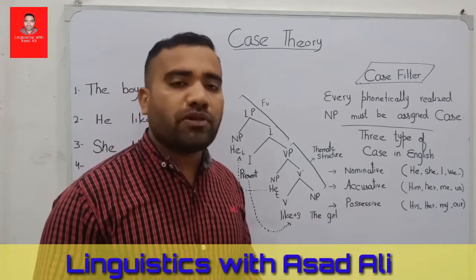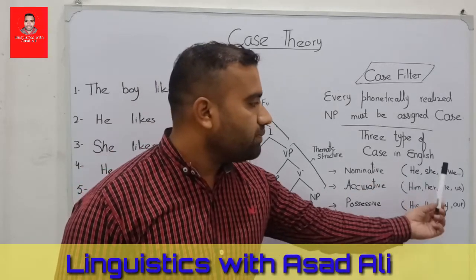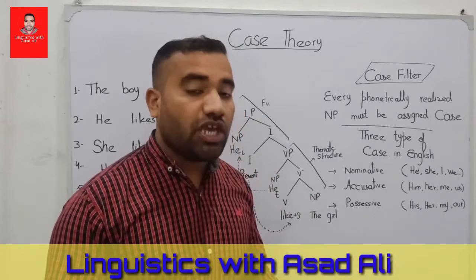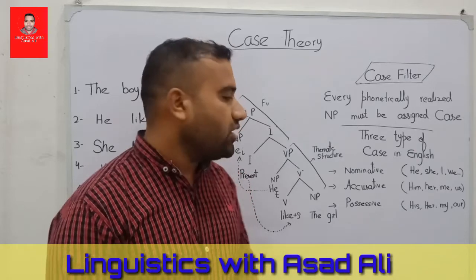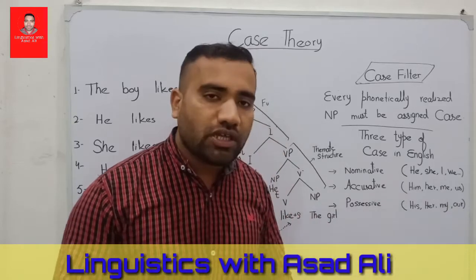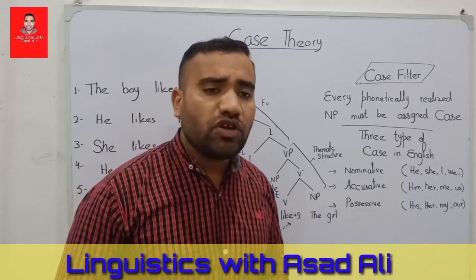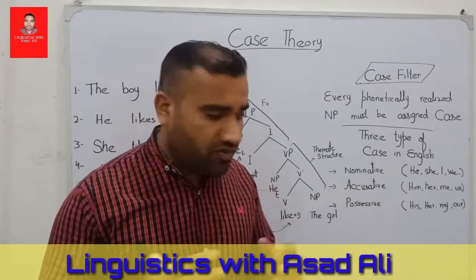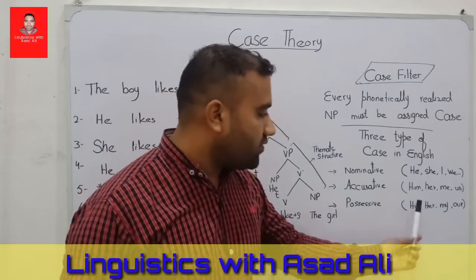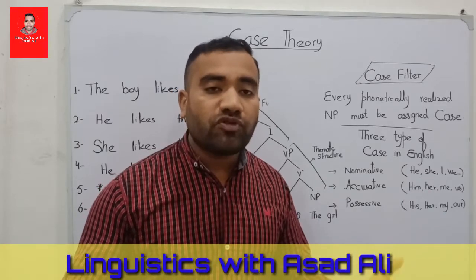In English we have three types of case marking: nominative, accusative, and possessive. Examples of nominative case marking are: he, she, I, we. Examples of accusative case marking are: him, her, me, us. Examples of possessive case marking are: his, her, my, our.